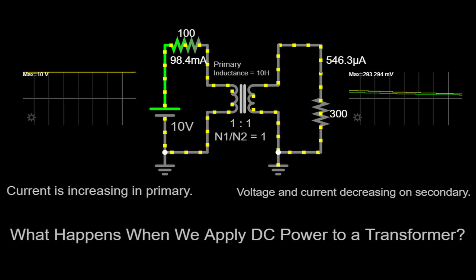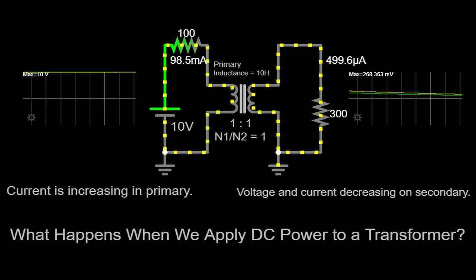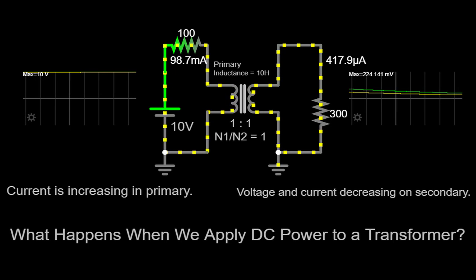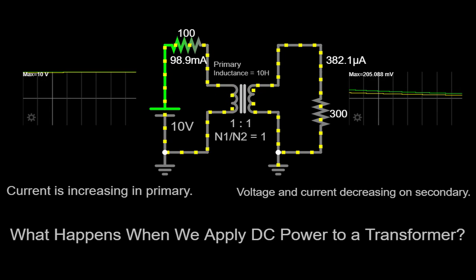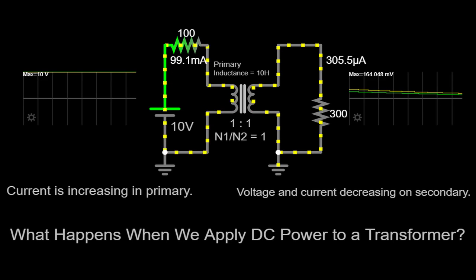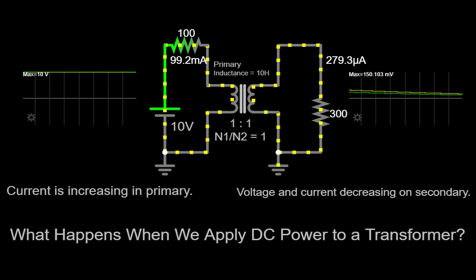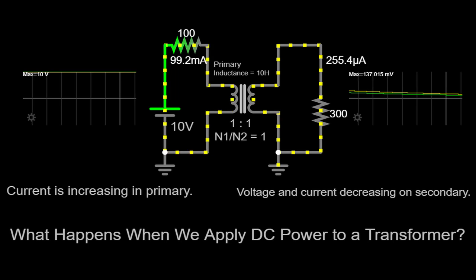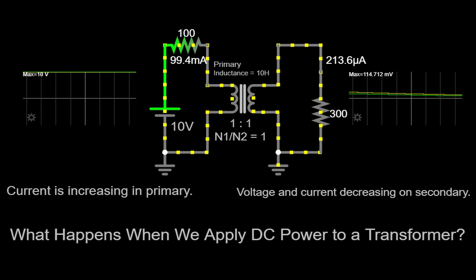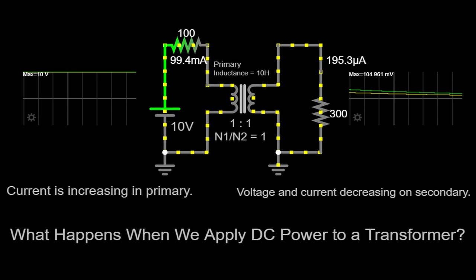Additionally, the continuous flow of current through the windings and core in a DC scenario can lead to potential damage. Transformers are typically designed to handle AC power, which allows for zero crossings and minimizes the stress on the windings. In the absence of these zero crossings in a DC setup, the windings and core may experience higher stress levels, potentially resulting in insulation breakdown or other issues.